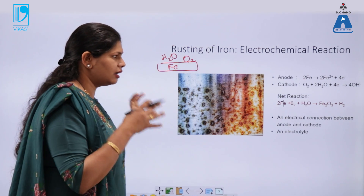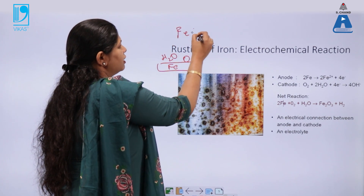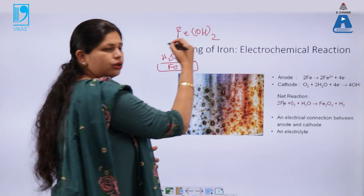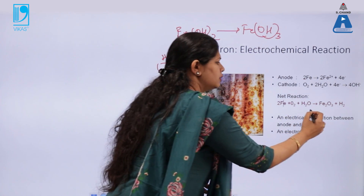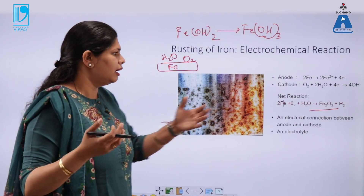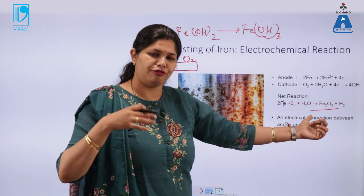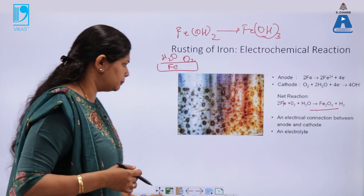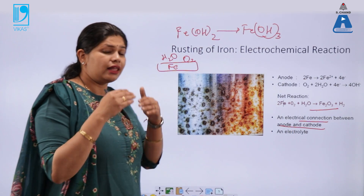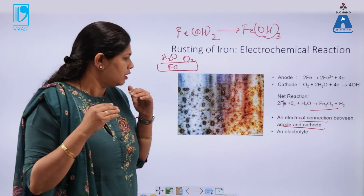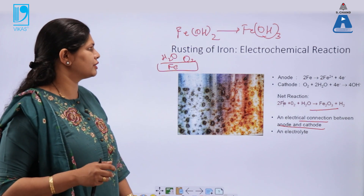The hydroxide ion reacts with iron to first form ferrous hydroxide. That ferrous hydroxide, due to aerial oxidation, forms ferric hydroxide Fe(OH)₃, and when water is removed it forms ferric oxide Fe₂O₃ as well as Fe₃O₄. The electrical connection between anode and cathode is facilitated by water. The electrolytic environment and water are important for the rusting of iron.